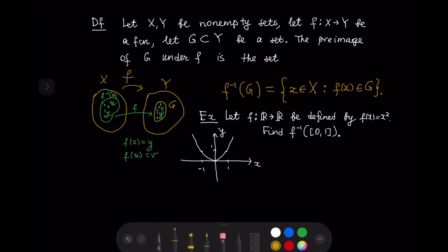Let f from ℝ to ℝ be the same function f(x) = x². We have the graph which is a parabola depicted here, and we want to find the pre-image of [0,1]. We look at the interval [0,1] on the y-axis and identify which portion of the parabola has y-coordinates in [0,1]. The x-coordinates of that portion are on the interval from -1 to 1, so the pre-image of [0,1] is [-1,1].